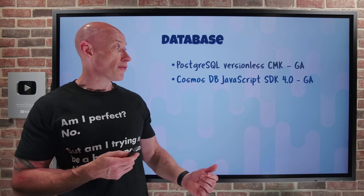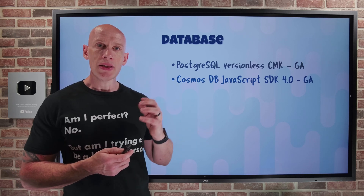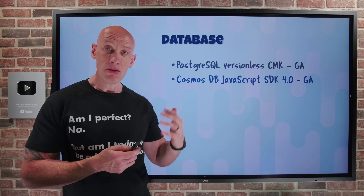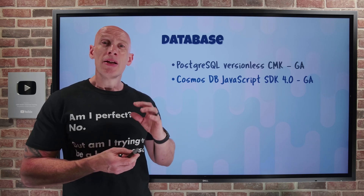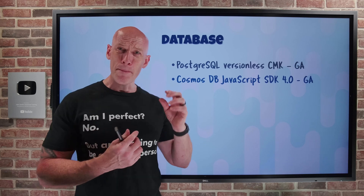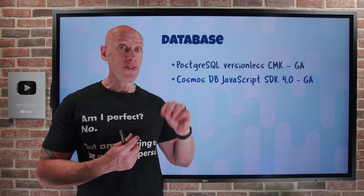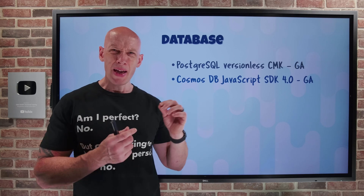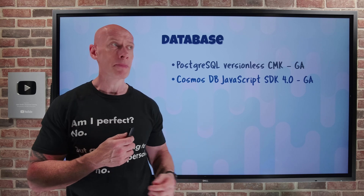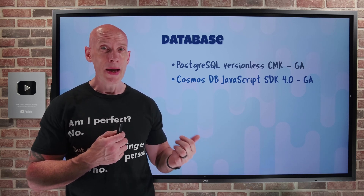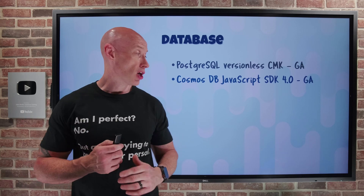The Cosmos DB JavaScript SDK 4.0 has gone GA. This is for building applications in JavaScript against the Cosmos DB NoSQL API. Key improvements include better bulk operation support, client-side encryption, built-in vector and full-text search support — the vector capability being huge for semantic meaning and large language models — better diagnostic logging, and more flexible and scalable query design.